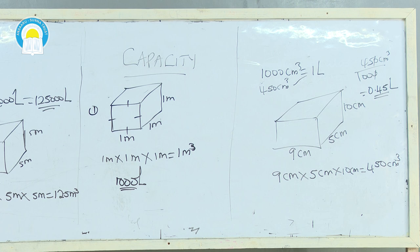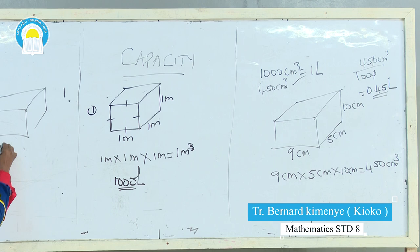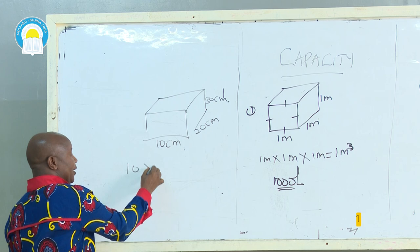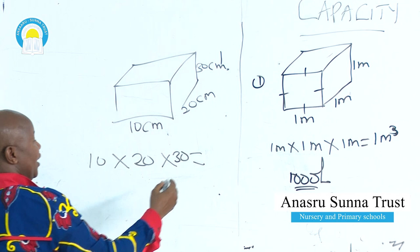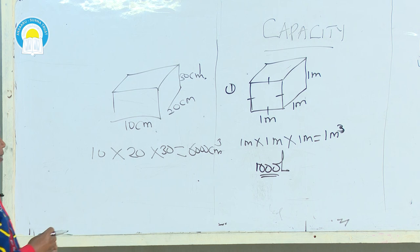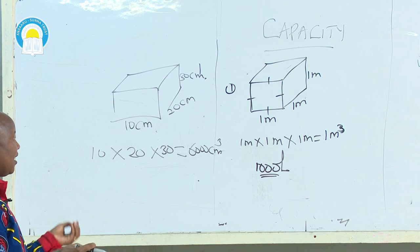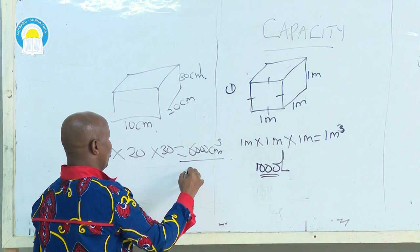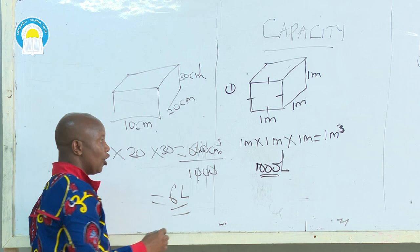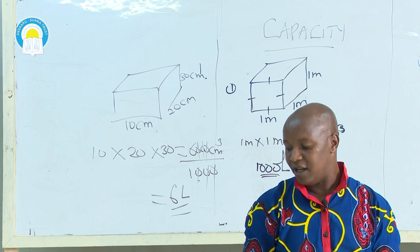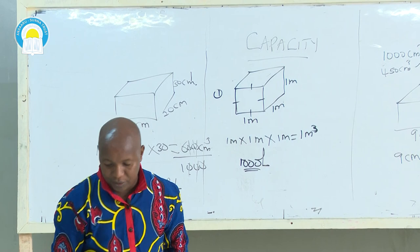Another example of a cuboid using cubic centimeters. We have 10 cm × 20 cm × 30 cm. Our volume is 10 × 20 × 30, which equals 6,000 cubic centimeters. What is the capacity in liters? To convert cubic centimeters to liters, always divide by 1,000. So 6,000 ÷ 1,000 equals 6 liters. To summarize: to convert cubic meters to liters, multiply by 1,000; to convert cubic centimeters to liters, divide by 1,000.